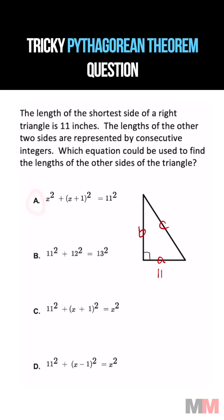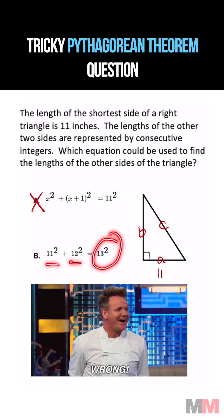A cannot be the answer because it puts 11 as the hypotenuse, but 11 is the shortest side. 11 squared plus 12 squared does not equal 13 squared.